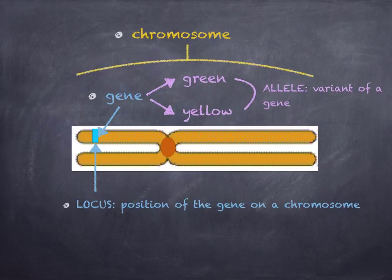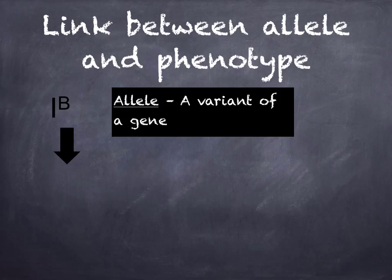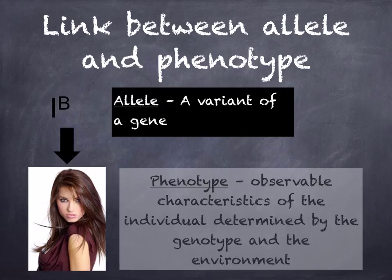An allele is a variant of a gene. For example, there's a gene for the color of a seed pod. This gene has got two different forms, which we call alleles: an allele for a green pod and an allele for a yellow pod. Only one allele of a gene can occur at the locus of one chromosome. The phenotype will be the observable characteristic determined by the genotype — for example, an allele for brown hair color gives a brown hair phenotype — and also by the environment, such as how often she goes in the sun.